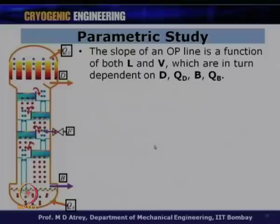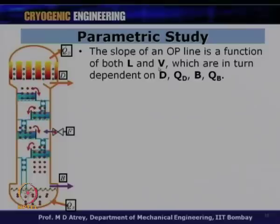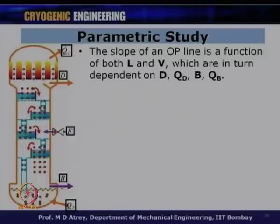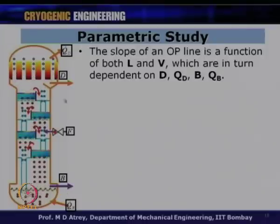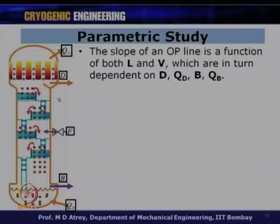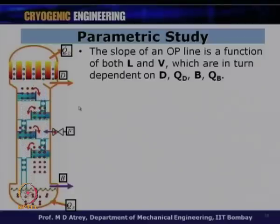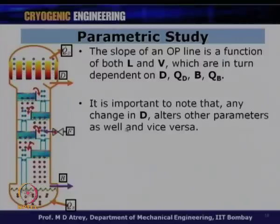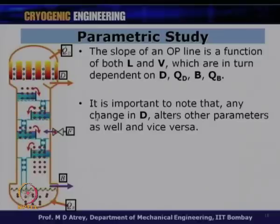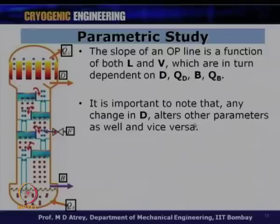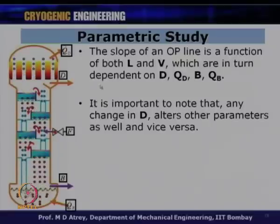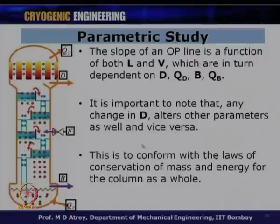Various parameters affect the reflux ratio. The slope of the operating line is a function of both L and V (i.e., L/V), which in turn depends on D, Qd, B, and QB. Any change in D or B alters other parameters and will alter L/V, because they are all related through the laws of conservation of mass and conservation of energy. So any change in D alters other parameters as well, and vice versa.